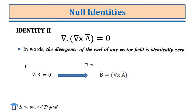The second identity is del dot (del cross A-vector) is equal to 0. This second identity states that the divergence of the curl of any vector field is identically 0. That means, if we consider V-vector and del dot V-vector is equal to 0 — that is, divergence of V-vector is 0 — it is a solenoidal field. Then V-vector is equal to del cross A-vector.